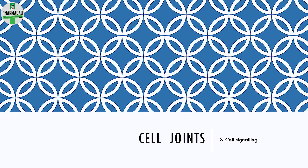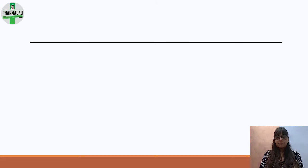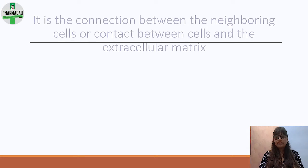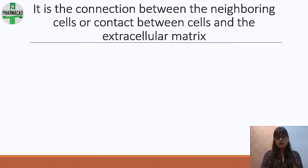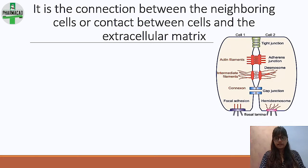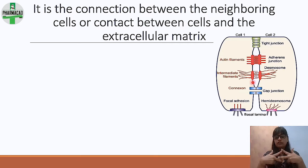We talk about cell joints — the connection between neighboring cells, or any cell it comes in contact with, or the extracellular matrix. Here you can see a diagram: this is cell one and this is cell two — that is a cell-to-cell joint. We will talk about the types of cell joints.